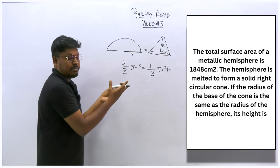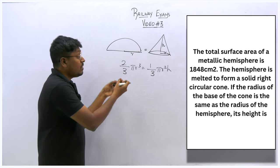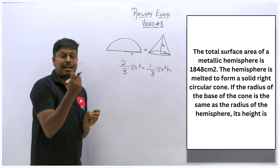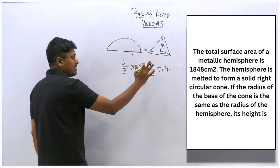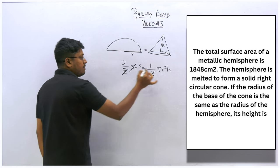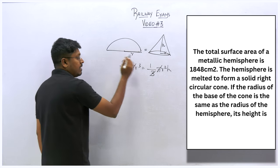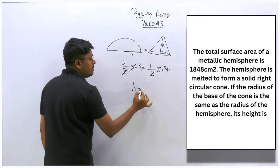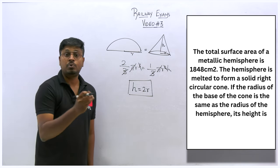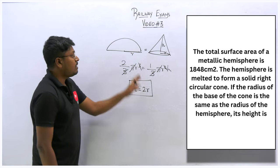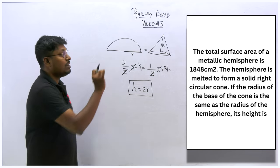Cancel 3, π, and r since both radii are equal. Height h = 2r. But the radius is unknown. The question gives the clue: total surface area of the hemisphere is 1848 cm². Use the formula 3πr² = 1848 to find r first, then substitute to get the height.